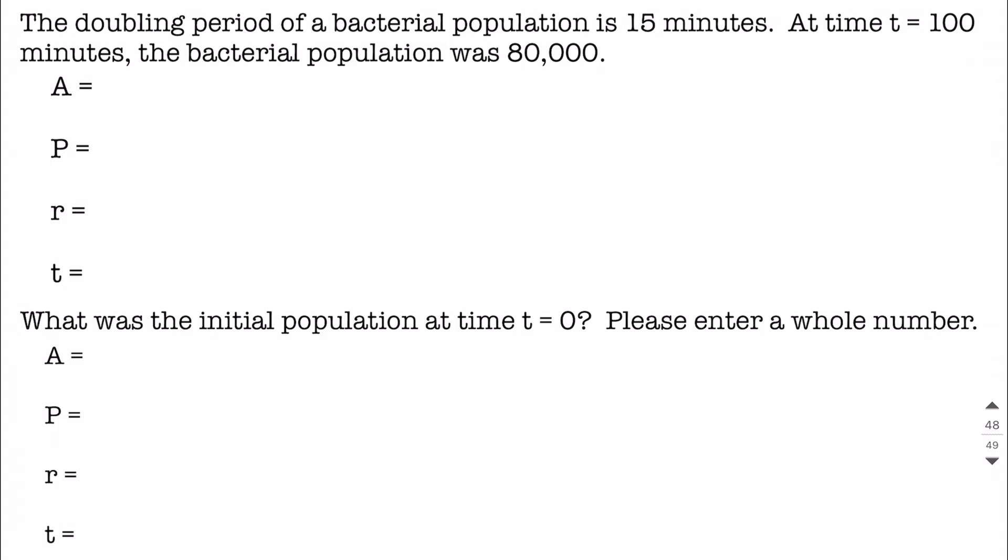Okay, on this example, we're given the doubling period of a bacteria population is 15 minutes, and we're also told that at time t equals 100 minutes, bacteria population is 80,000. So to get going on this, because we're told about the doubling period, what I want to do is start out with trying to find our rate just based on the doubling time. I'm going to stay consistent throughout this example that our time is going to be in minutes because it was initially given to us in minutes.